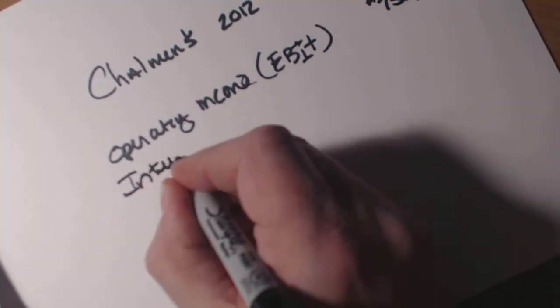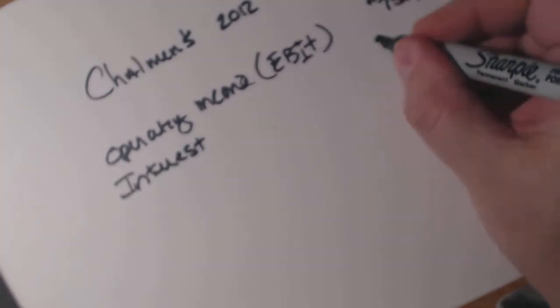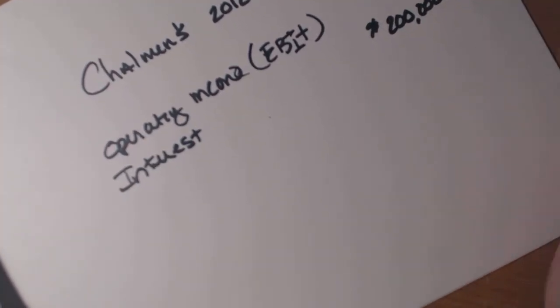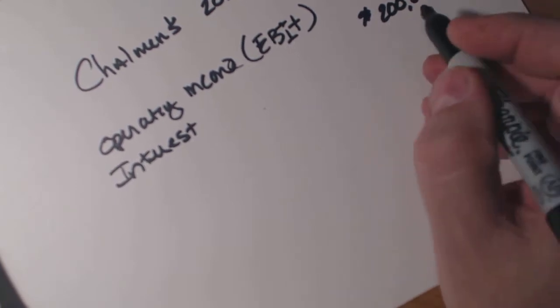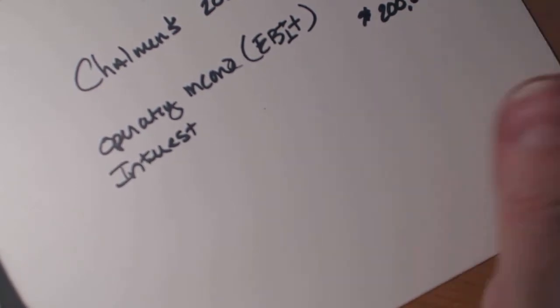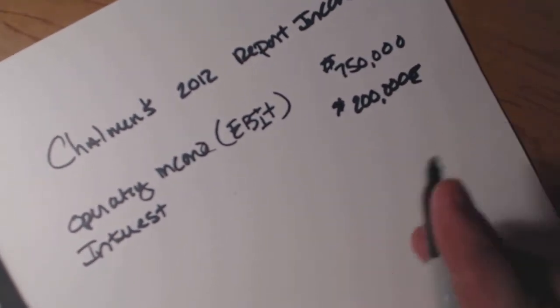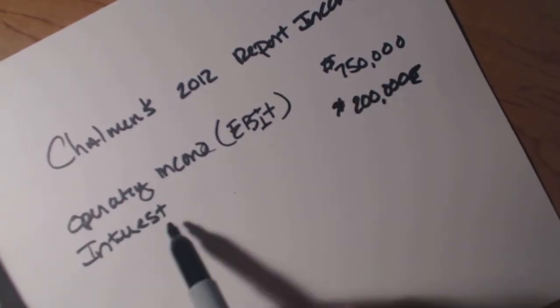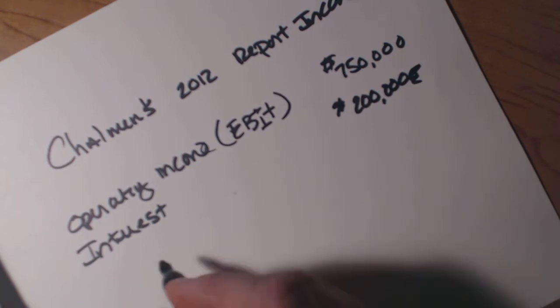Well, then they had a $200,000 interest payment that they received, that's $200,000, not $2 million, $200,000 for bank accounts and other areas. So they had an operating income, EBIT of $750,000, then they had interest of $200,000.